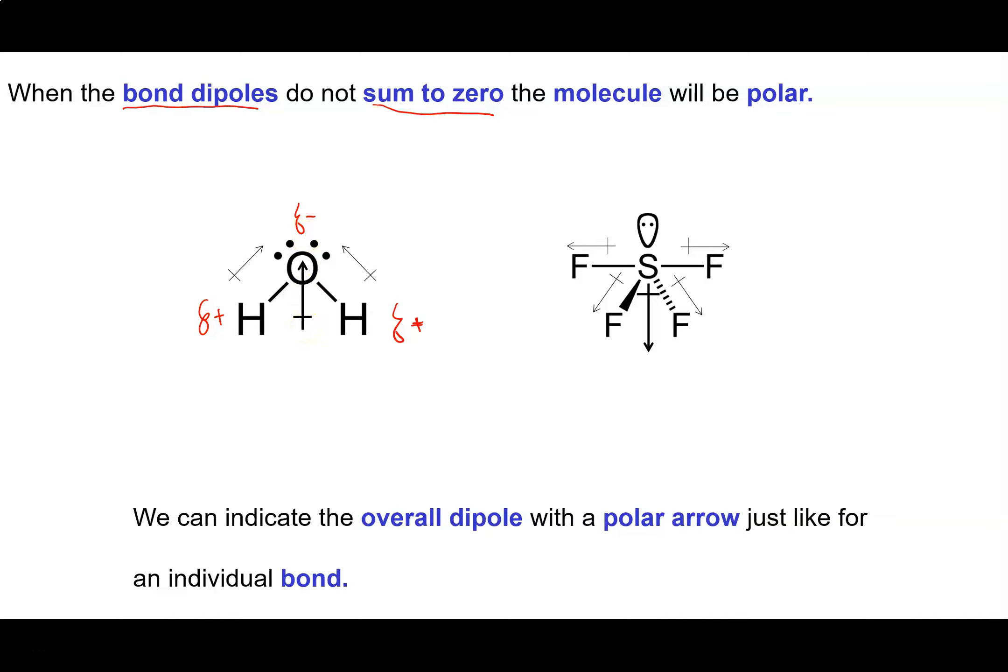Here's a molecule that is T-shaped, oh sorry it's not T-shaped, it's see-saw. What we see here is fluorine is always the negative end of a bond. And the sulfur will be the positive end of each of those bonds. The left and right components cancel out. One bond is pulling down and forwards. The other one is pulling down and back. And the net result is that we have a negative end of the molecule here and this end of the molecule will be positive. So when the bond dipoles do not sum to zero, when they add to give a net dipole, then our molecule will be polar. And just like for a bond, you can indicate the overall dipole with a polar arrow.